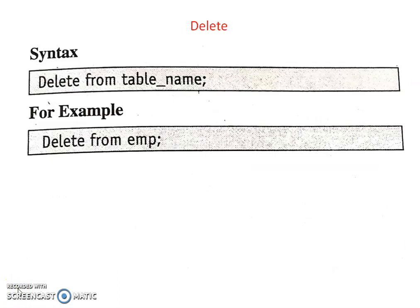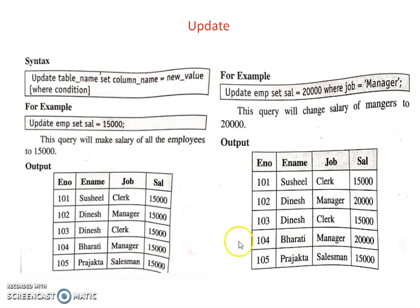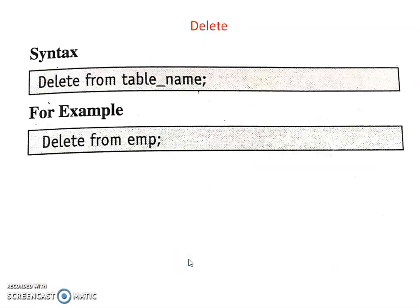Now the next topic is the delete query. As per requirement, a record from an existing table can be removed using the DELETE command. The DELETE command can have a WHERE clause optionally. The syntax is: DELETE FROM table_name. For example, DELETE FROM employee WHERE employee_number = 103. This query will delete the record of the employee with employee number 103 from the employee table. This is the delete operation.